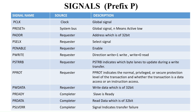PSLAVE error is also asserted by the slave. It is an optional signal — not mandatory. The slave can assert PSLAVE error high to indicate an error condition on an APB transfer. If the slave finds any error during the transfer, it asserts this signal. We will see more detail about PSLAVE error in further slides.